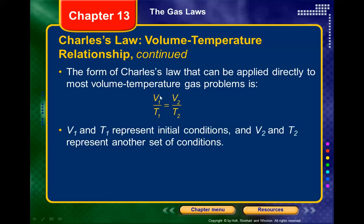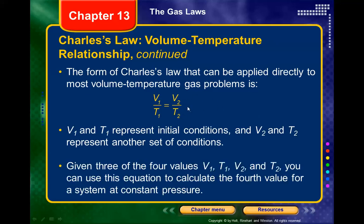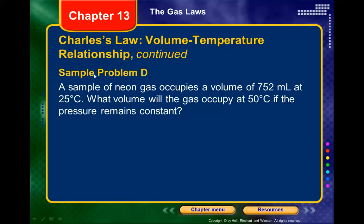We'll get problems where three of these four variables are given and we solve for the unknown. A typical problem: a sample of neon gas occupies a volume of 752 milliliters at 25°C. What volume will the gas occupy at 50°C if pressure remains constant?